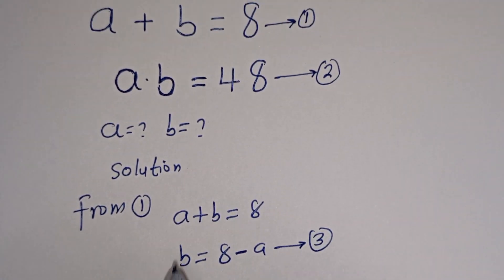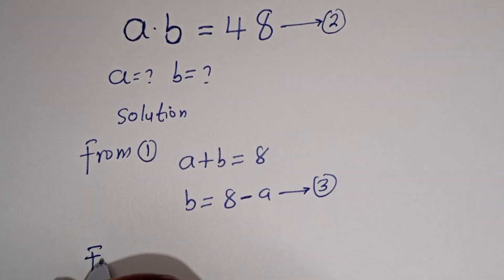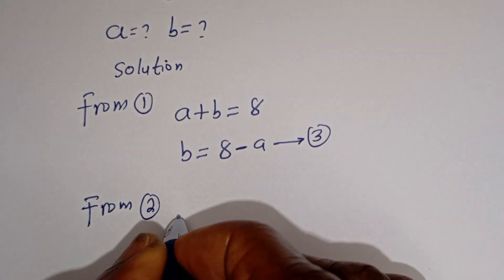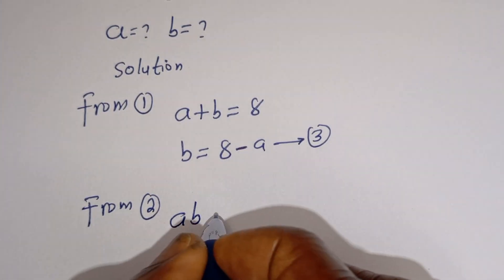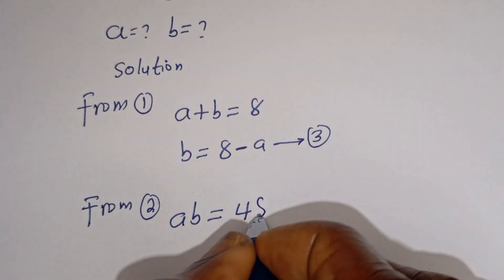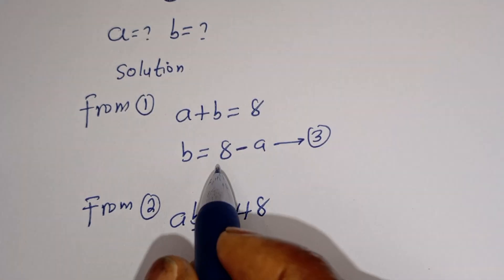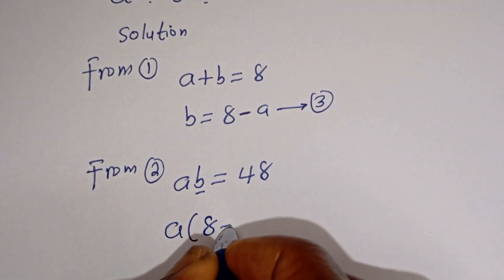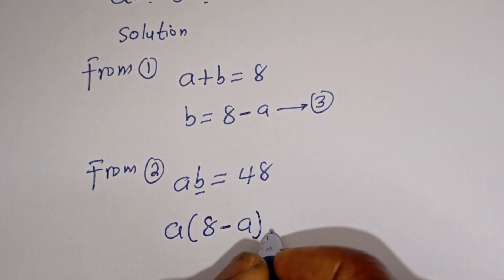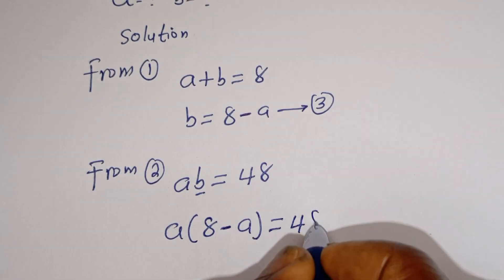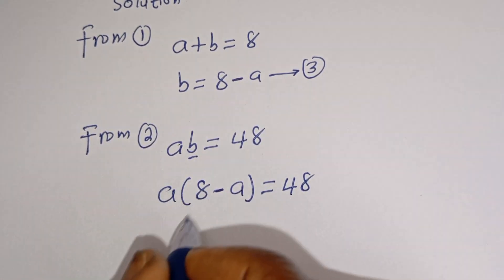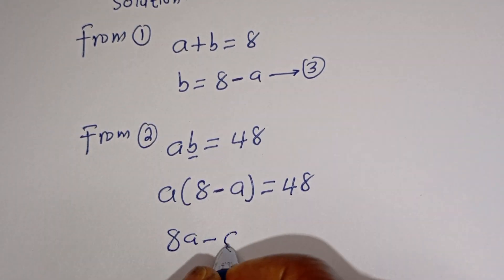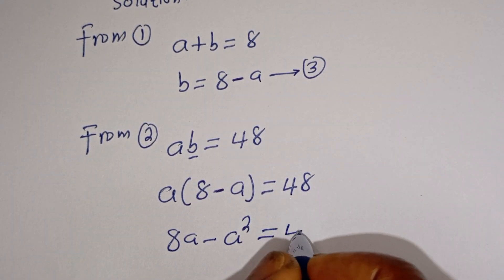From equation 2, we can now substitute for B. That is, A times B is equal to 48. When B is equal to 8 minus A, we have A times (8 minus A) is equal to 48. Now let's open the bracket: A multiplied by 8 gives 8A, minus A times A, that is minus A squared, is equal to 48.